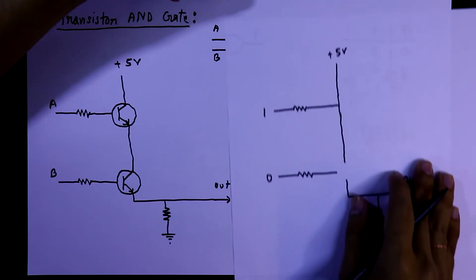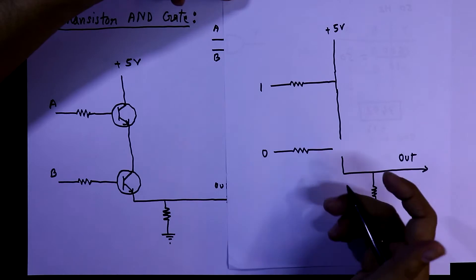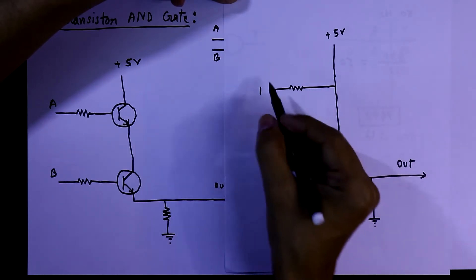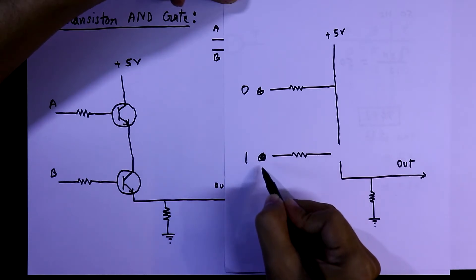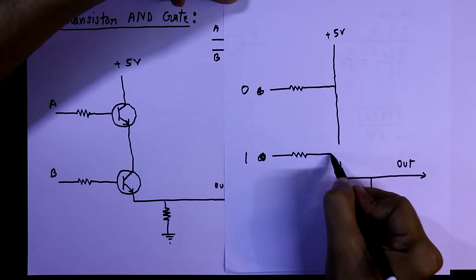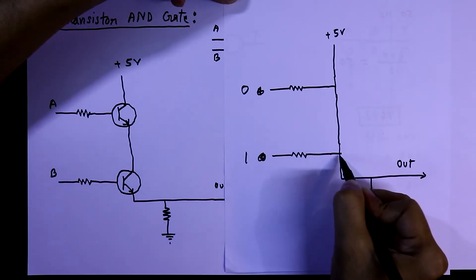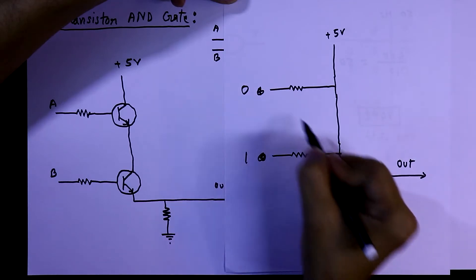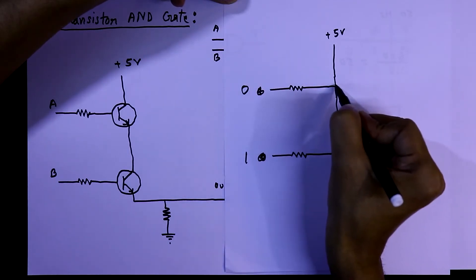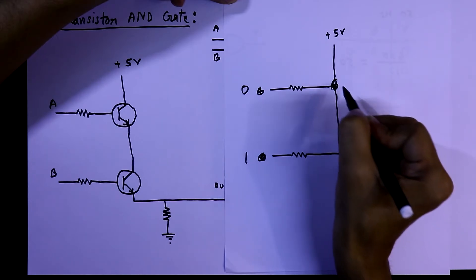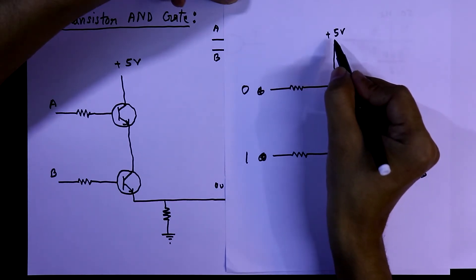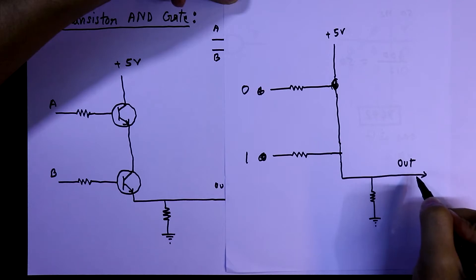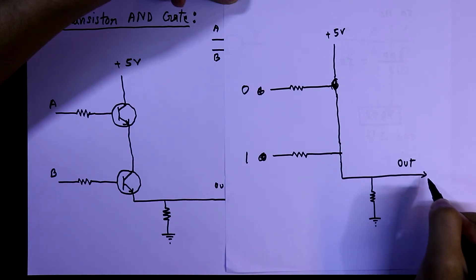For the third condition, A=0 and B=1. The second transistor works as a closed circuit and the first transistor works as an open circuit. Again, the 5 volts is disconnected from the output, so we get output 0.